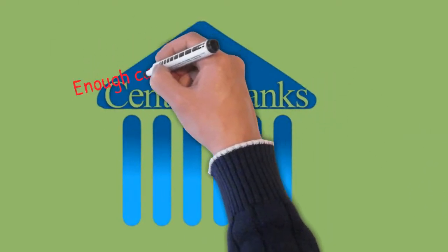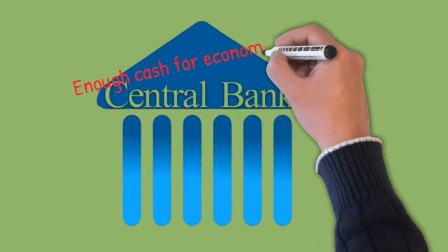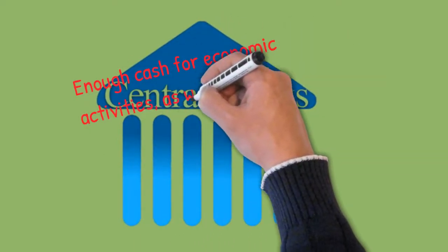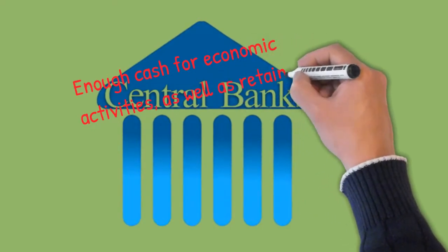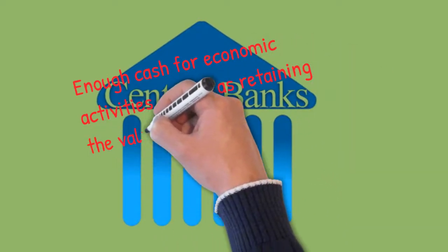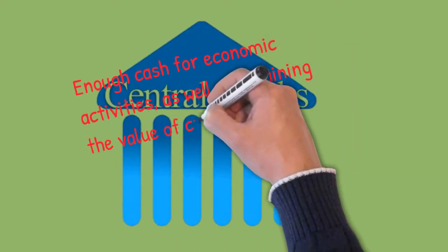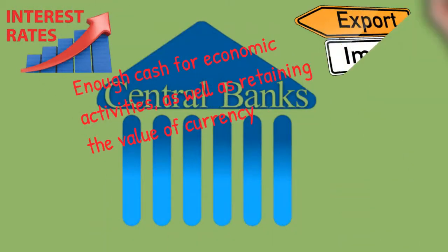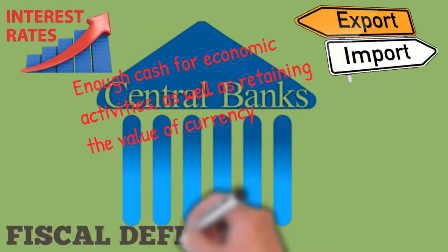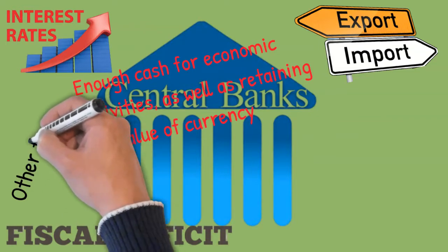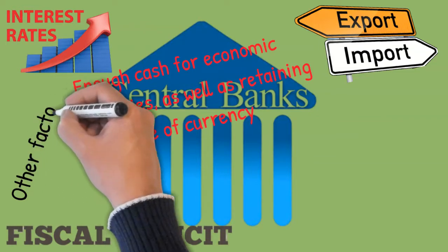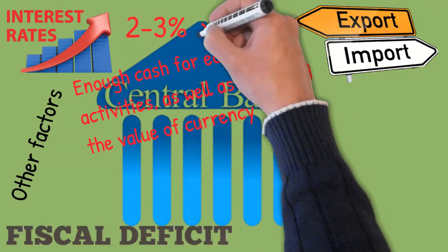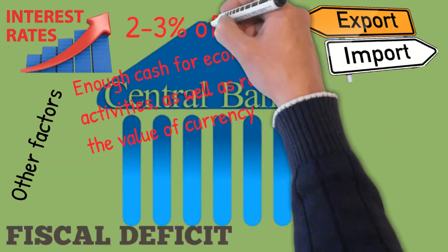Although central banks have no limits or defined rules to print money, it has to be enough for the economy to provide services and goods, and also retain the value of currency in circulation. The value of any currency depends on factors like interest rate, average export, fiscal deficit, and a host of other factors.